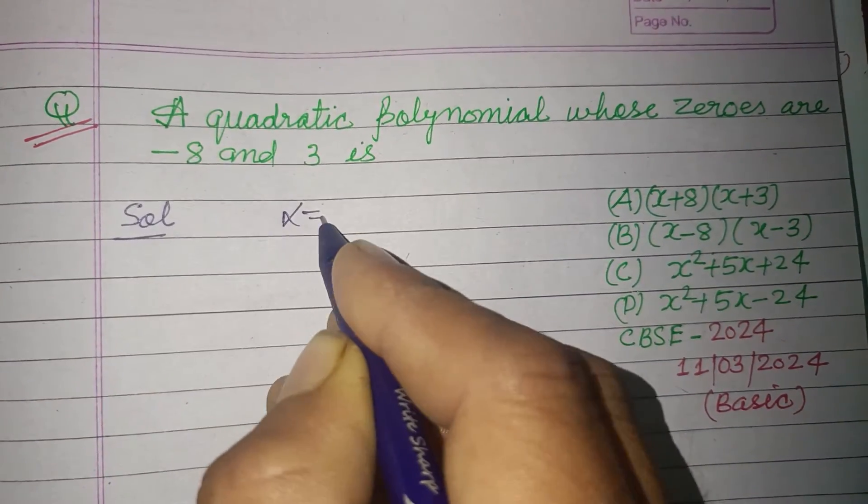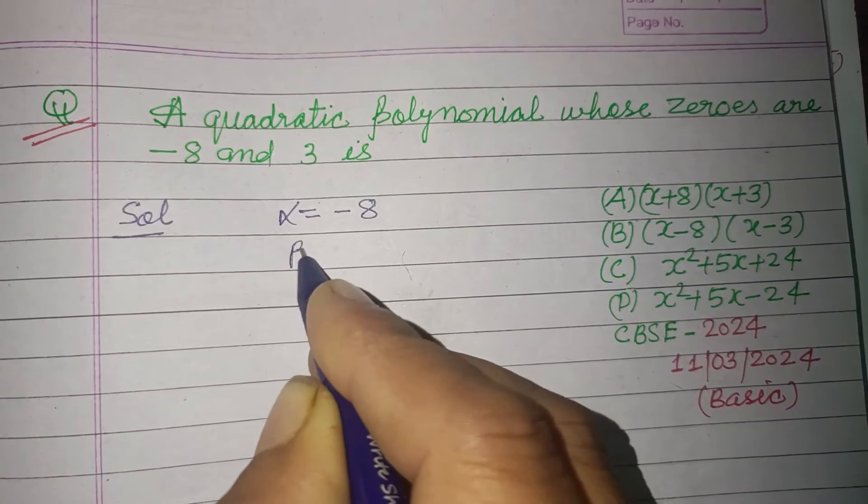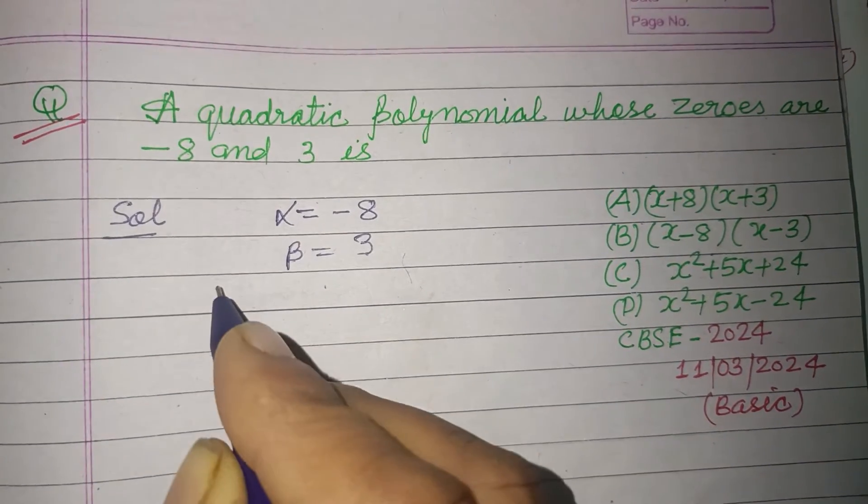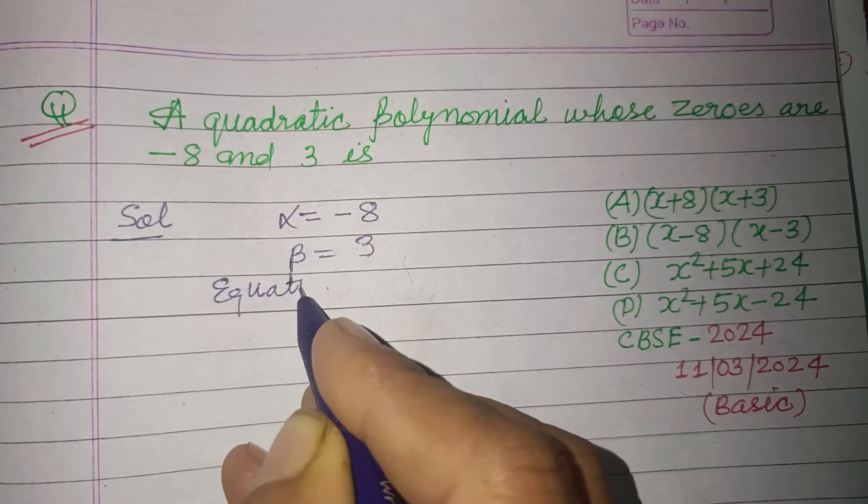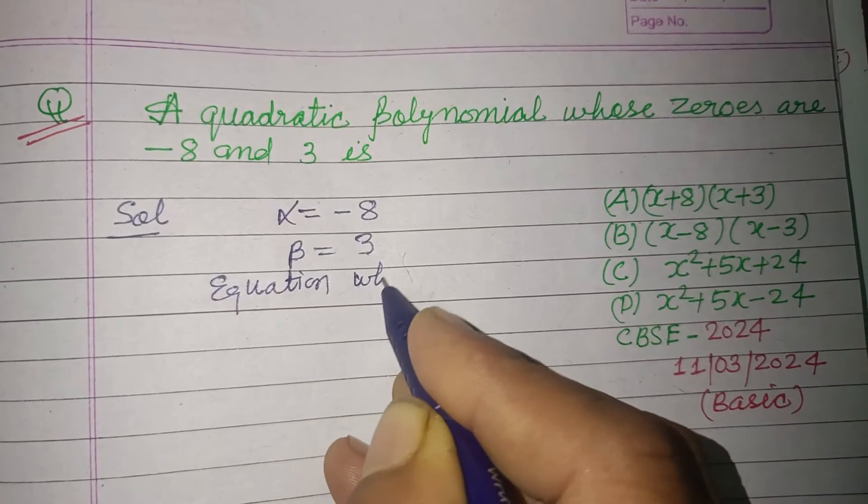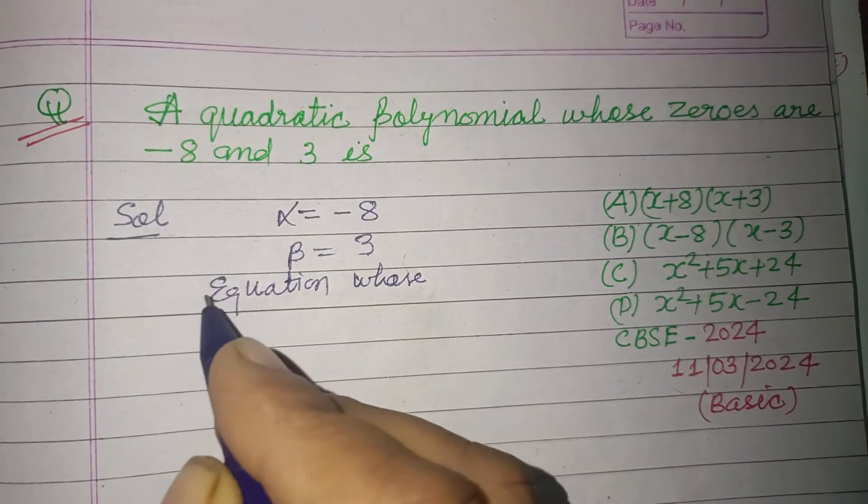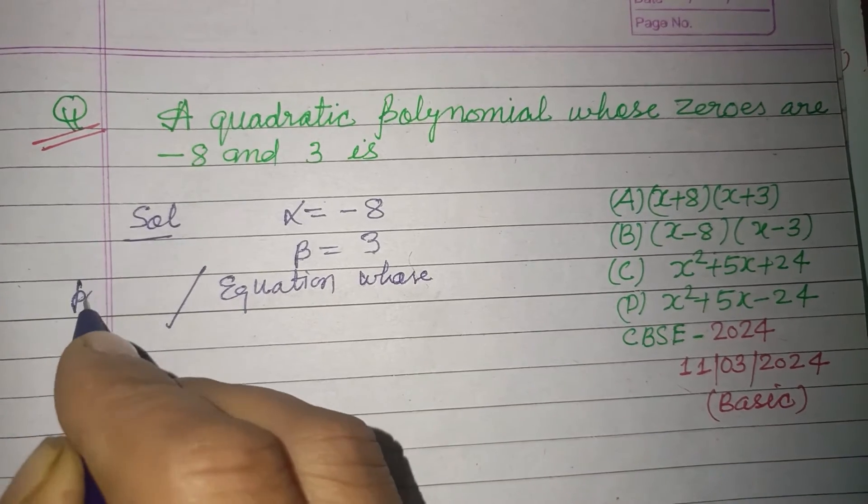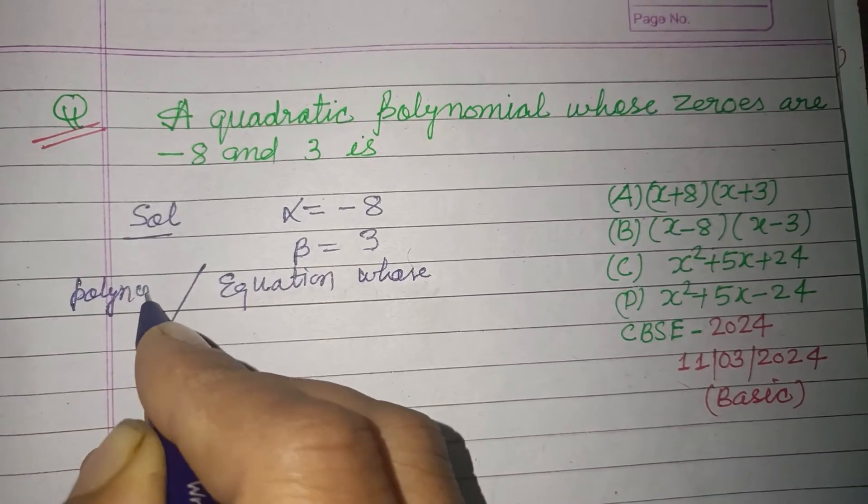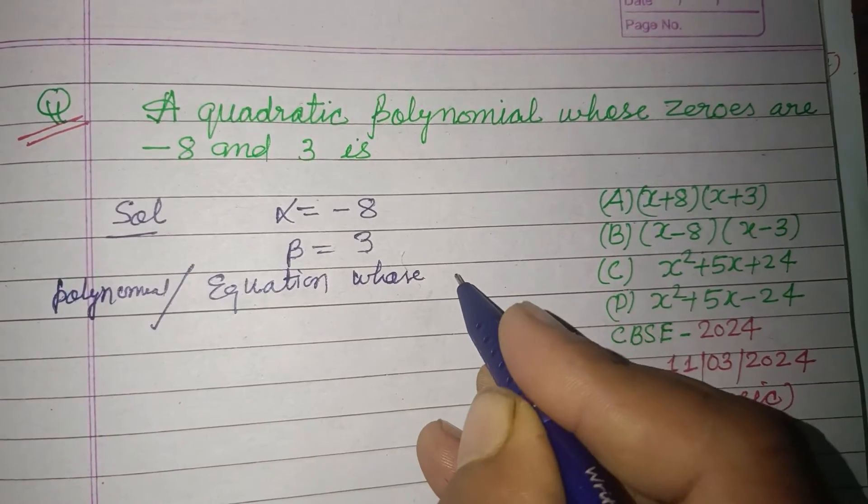Here two roots are given: alpha equals -8 and beta equals 3. The question asks for a polynomial whose roots are alpha and beta.